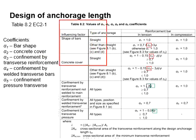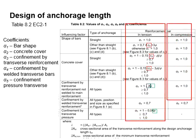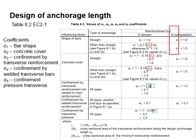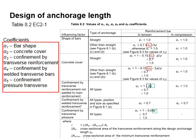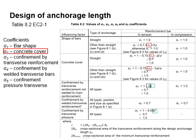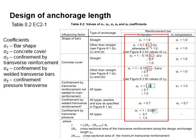Depending on the region where the reinforcement bar is being anchored, the factor η1 can vary. Table 8.2 outlines the values of alpha1 to alpha5 coefficients. The coefficients vary depending on whether the bar is in tension or compression. In general, the alpha values for compression are mostly 1.0, except alpha4. Alpha5 is not applicable for compression. Alpha1 represents the effect of bar shape, alpha2 represents the effect of concrete cover, and alpha3 to alpha5 represent the confinement effect by transverse reinforcement, welded transverse bars, and transverse pressure respectively.